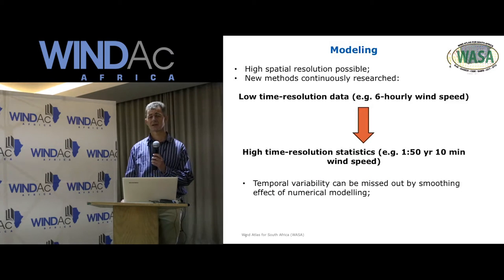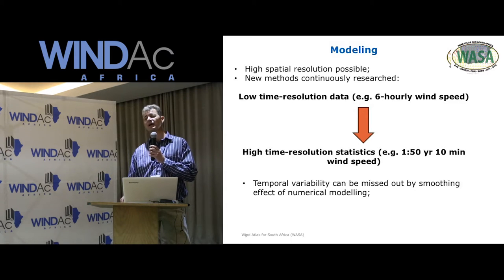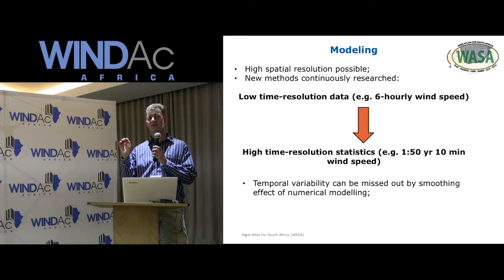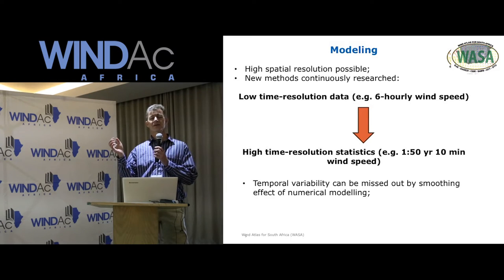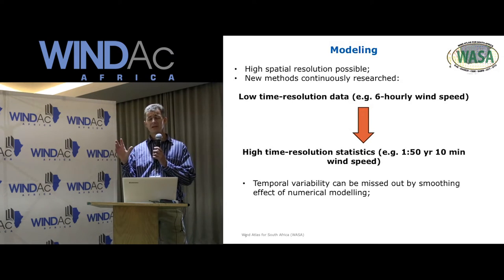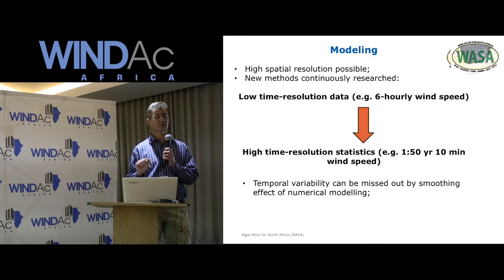For modeling, we know that much higher spatial resolution is possible and new methods are under continuous research. The biggest obstacle is to take your low time resolution data — for example, 6-hour wind speeds — and convert that to high time resolution statistics, such as calculating a 1-in-50-year 10-minute forecast wind speed. The problem is that temporal variability can be missed due to the smoothing effect of numerical modeling.